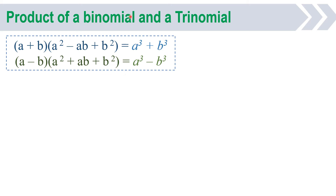This is the product of a binomial and a trinomial of special form. For example, a plus b — that's the binomial — times a squared minus ab plus b squared — that's the trinomial. If you have this case, this will just be your pattern: a cubed plus b cubed. It means you just have to cube the first and the second term, and that's it.